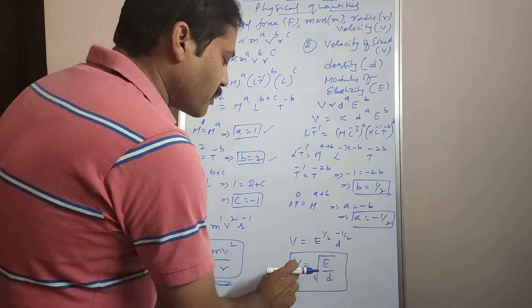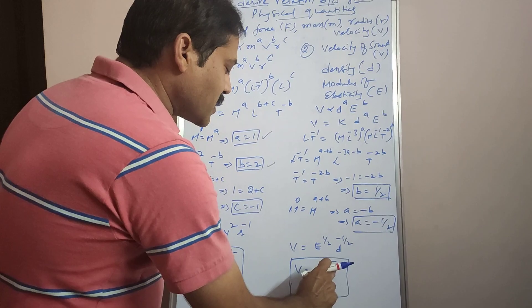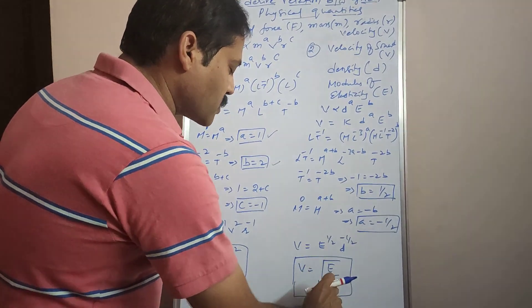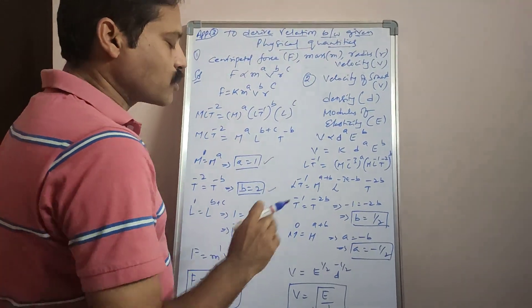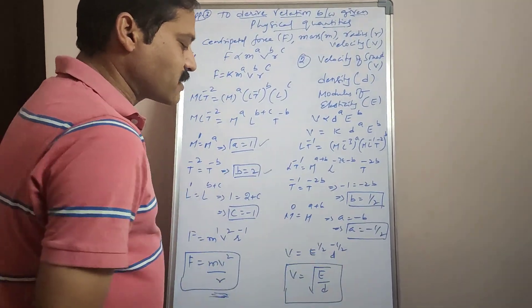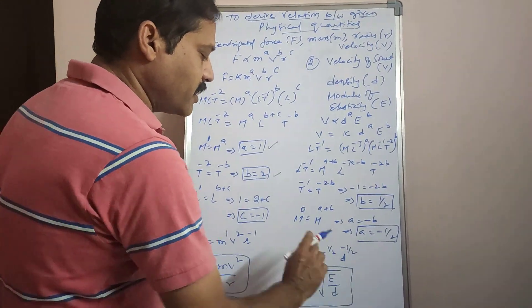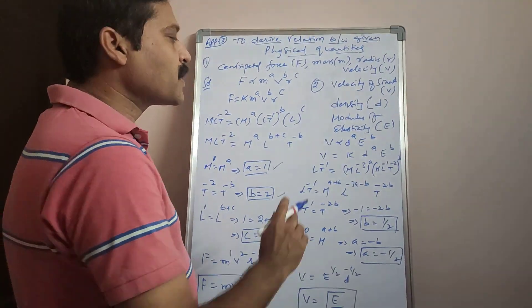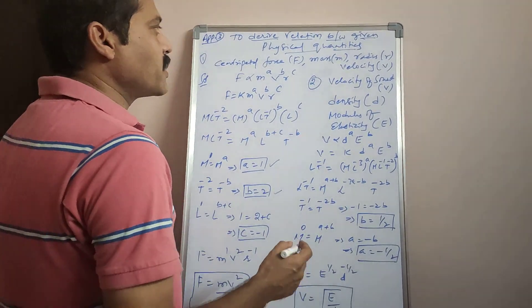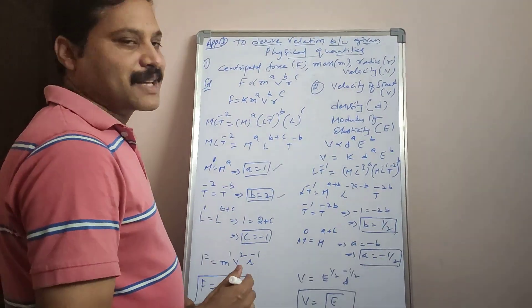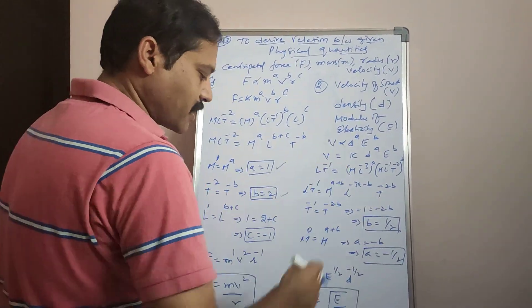The velocity of a sound wave is directly proportional to the square root of the modulus of elasticity and inversely proportional to the square root of the density of the medium. This is the relation between these three physical quantities. Similarly, other relations like T = 2π√(L/G) can be derived using this dimensional method.